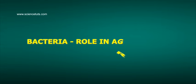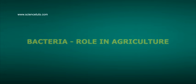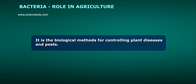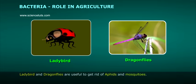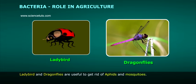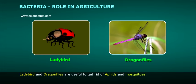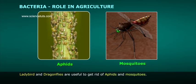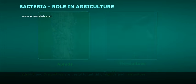Bacteria: Role in agriculture. It is the biological method for controlling plant diseases and pests. Ladybirds and dragonflies are useful to get rid of aphids and mosquitoes.